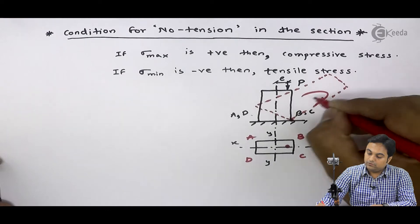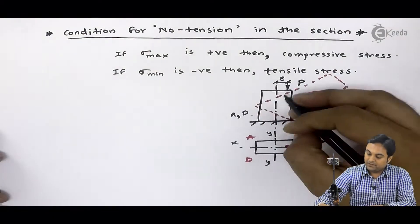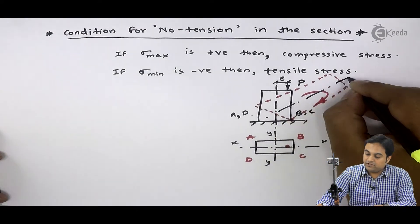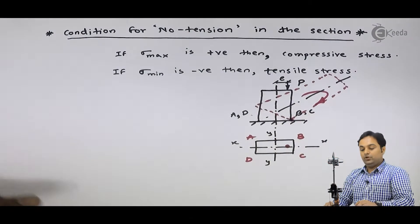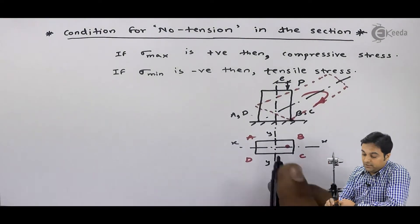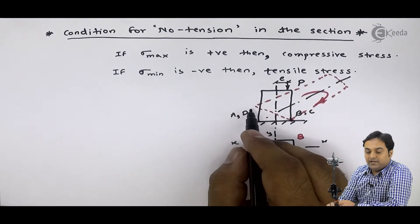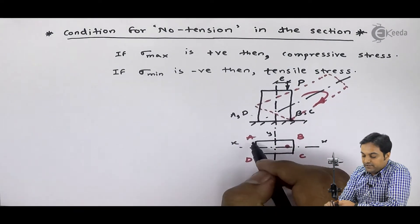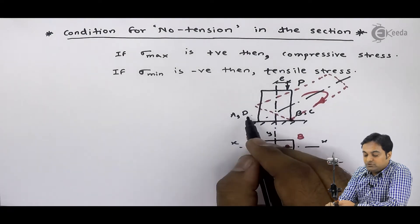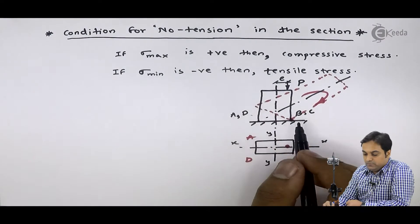And if it is moving, then it is very harmful. This structure should not move like this because of eccentric load. So, what would be our condition? That in the structure, tension should not be there. Because as soon as ad pe there is tension, it gets lifted from the ground. It will be lifted from the ground.